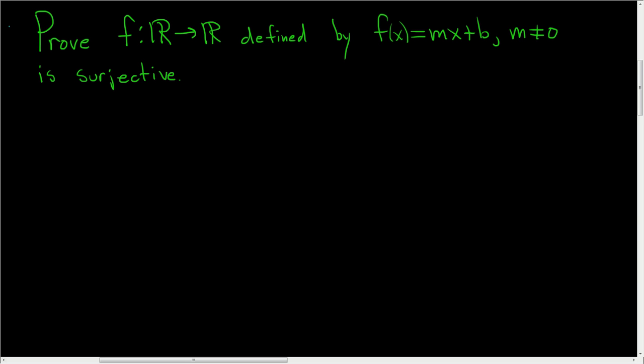We have a function f from the set of real numbers into the set of real numbers defined by f(x) = mx + b. We're told m is not zero, and we have to prove that this function is a surjection.